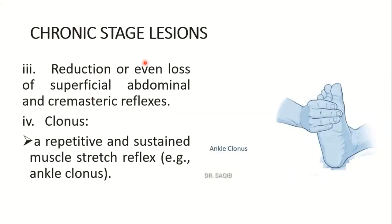Chronic stage lesions also produce reduction or even loss of superficial abdominal and cremasteric reflexes. The superficial abdominal reflex: the abdomen is superficially divided into quadrants, and if a quadrant of the abdomen is stroked, the umbilicus deviates and moves towards that stroke point of stimulation — that is the reflex. The cremasteric reflex: there is a cremasteric muscle in males, and if the medial side of the thigh is stroked on either side, the testis on that side moves upward — this is the cremasteric reflex.